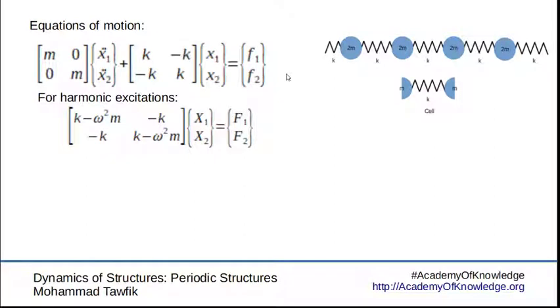Transforming this into the frequency domain by introducing harmonic excitations, we get a relation between the amplitudes of x1, or the motion of the first mass, and the amplitude of x2, the motion of the second mass, multiplied by matrix to be equal to the amplitudes of the excitation forces. The relation now contains the excitation frequency. Again, we are assuming harmonic excitations.